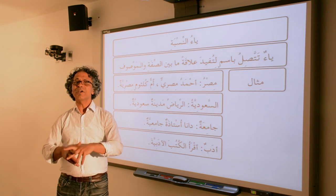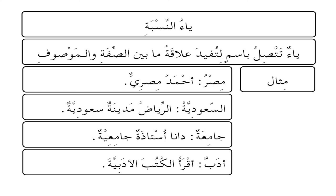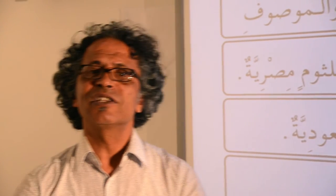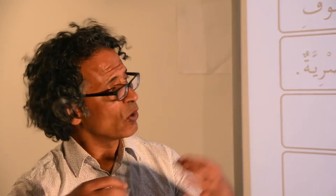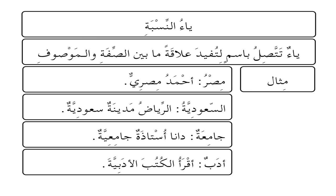Let's talk now about another type of صفة: ياء النسبة. It's a ياء attached at the end of nouns to indicate some relationship between the adjective and the person, place, or thing. ياء تتصل باسم لتفيد علاقة ما بين الصفة والموصوف — between the adjective and the noun it describes. For example: مصر is the noun for Egypt. By saying أحمد مصري, adding the ياء of النسبة establishes a relationship of affiliation or origin between أحمد and مصر.